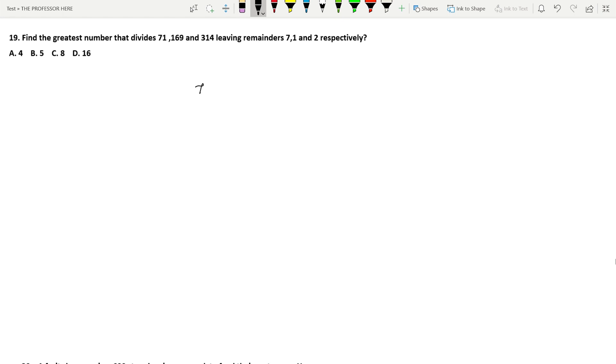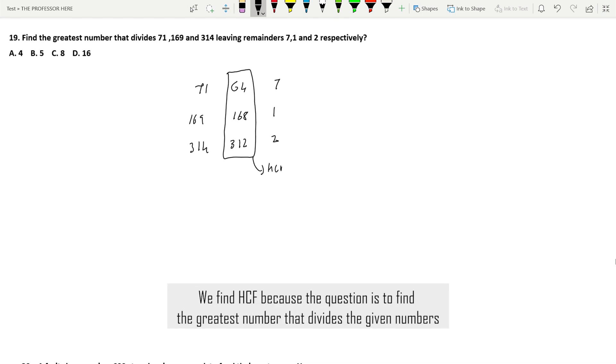The first number is 71. The remainder we get is 7, which means we will divide up to 64. Next number is 169. The remainder is 1, which means we will divide up to 168. Next number is 314. The remainder is 2, which means we divide up to 312. Now you find the HCF of these numbers.